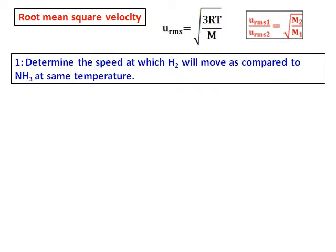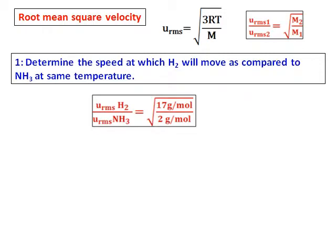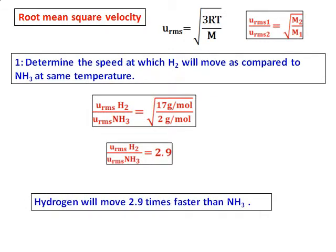Question 1: Determine the speed at which hydrogen will move compared to ammonia at the same temperature. Hydrogen is a lighter gas and ammonia is heavier. Applying the ratio formula: RMS velocity of hydrogen divided by RMS velocity of ammonia equals square root of molar mass of ammonia (17) divided by molar mass of hydrogen (2). The answer is 2.9 — hydrogen moves 2.9 times faster than ammonia, as expected for a lighter gas.